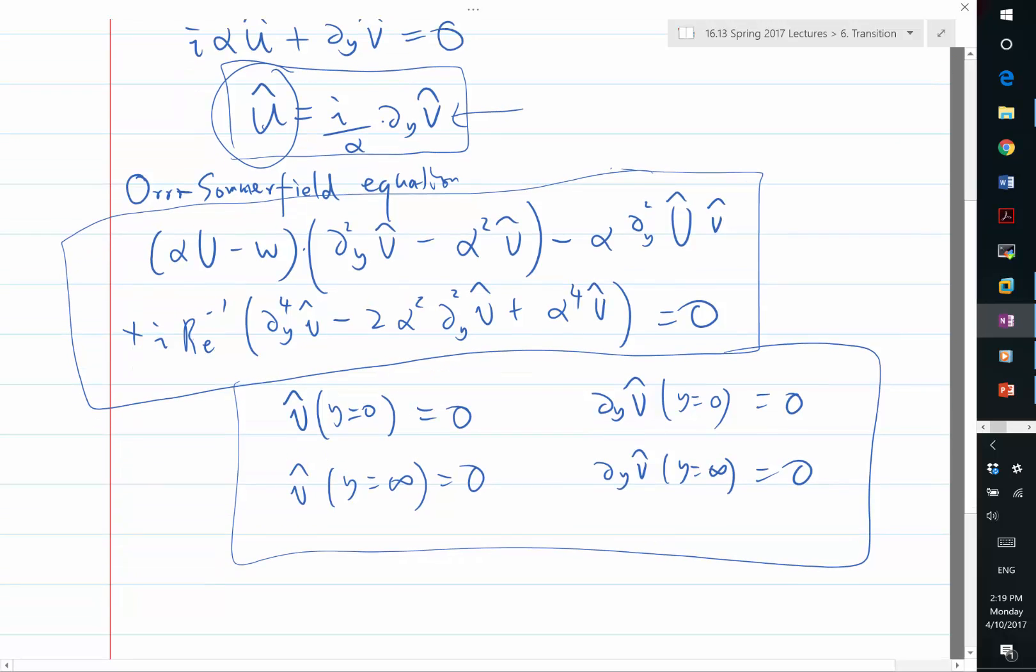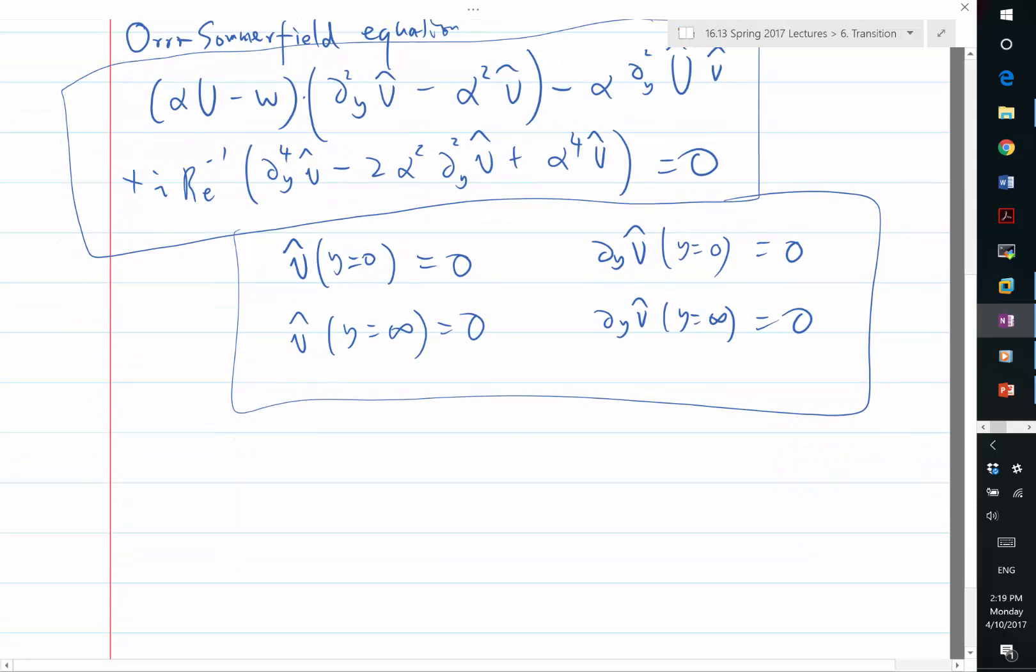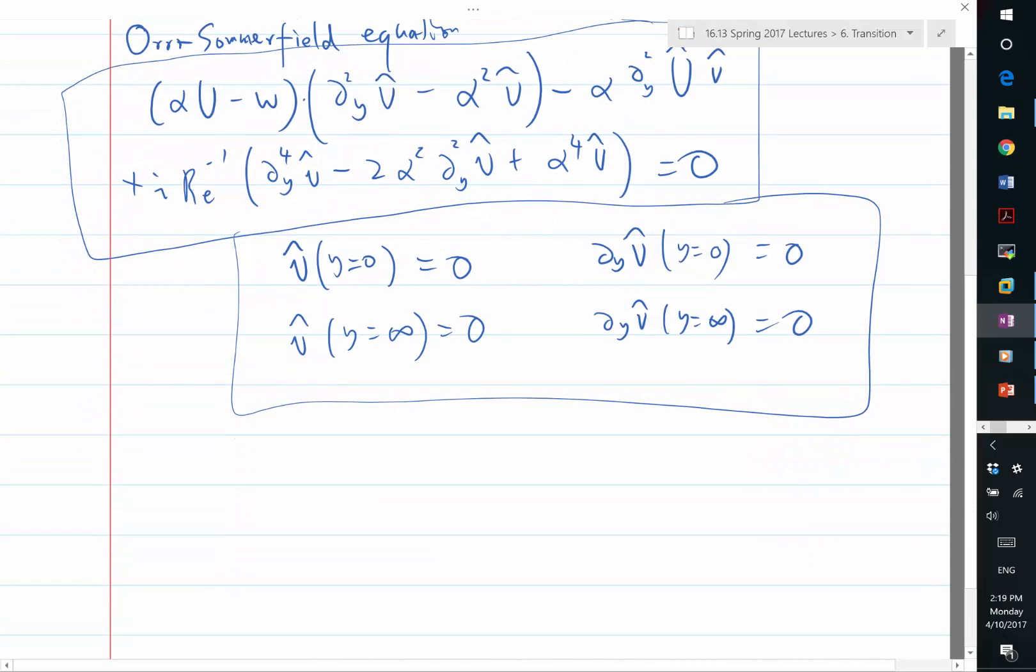The eigensolutions can be found in two ways. You can either fix an alpha and look for the eigensolutions, with the eigenvalues being omega.